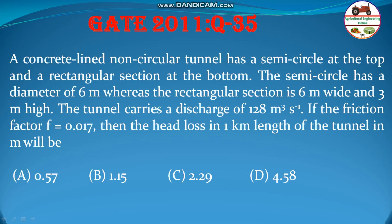Hello students, welcome to my channel. Let us solve a problem from GATE 2011 Question 35. A concrete-lined non-circular tunnel has a semicircle at the top and a rectangular section at the bottom. The semicircle has a diameter of 6 meters, whereas the rectangular section is 6 meters wide and 3 meters high. The tunnel carries a discharge of 128 cubic meters per second. If the friction factor f is 0.017, then the head loss in 1 kilometer length of the tunnel in meters will be?